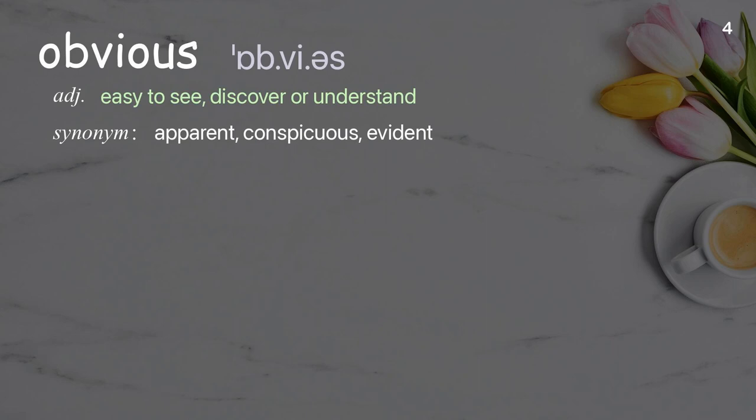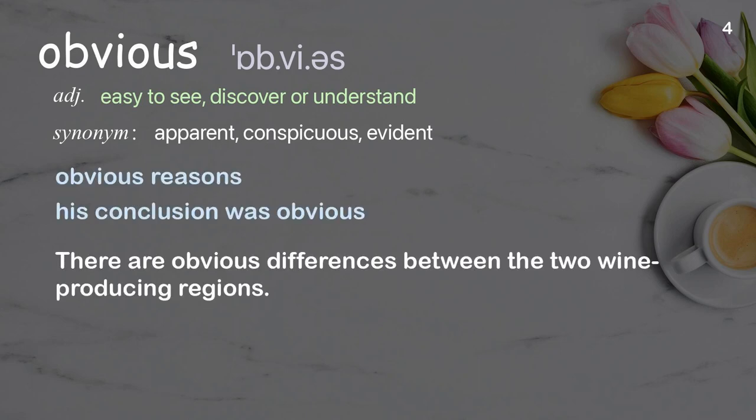Obvious: easy to see, discover, or understand. Examples: obvious reasons, his conclusion was obvious. There are obvious differences between the two wine-producing regions.